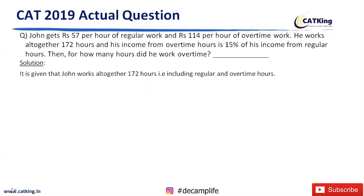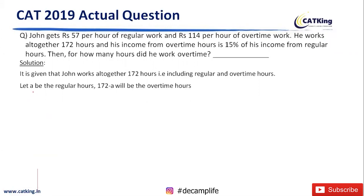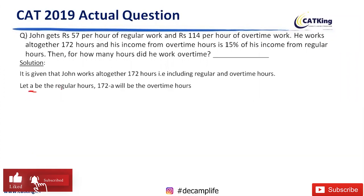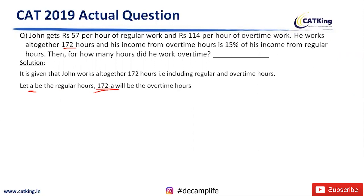See in this question, if we assume the regular hours be 'a', and total hours is 172 — this is given — so the number of overtime hours will be 172 minus a. Now, it is given that 57 per hour is the income for regular hours. So the total income from regular hours will be the per hour income into the number of regular hours.